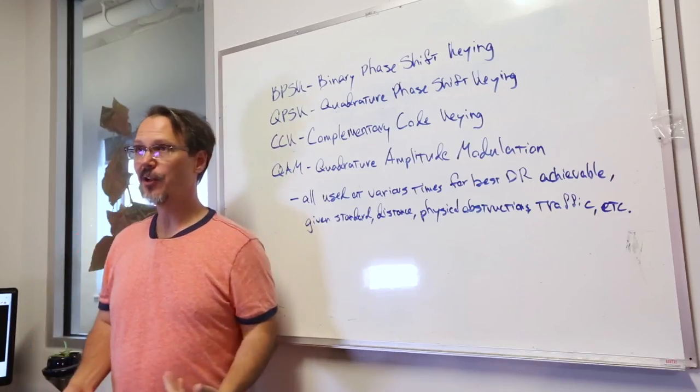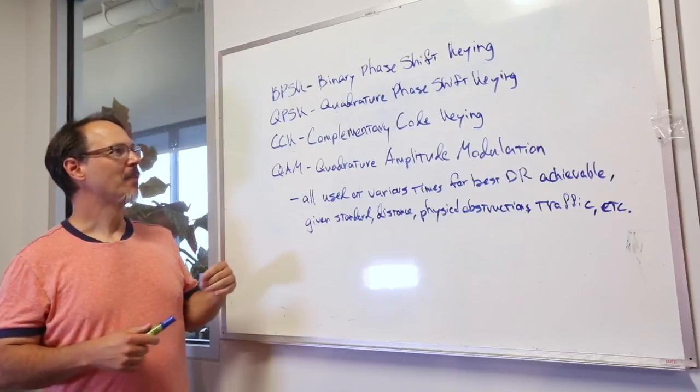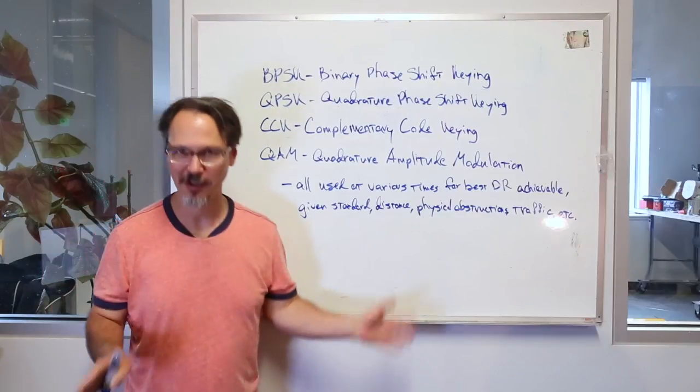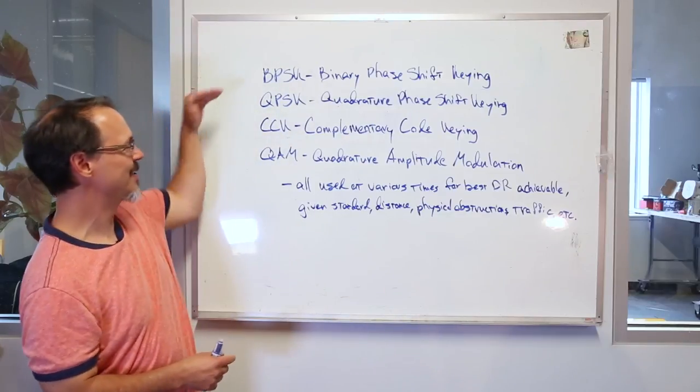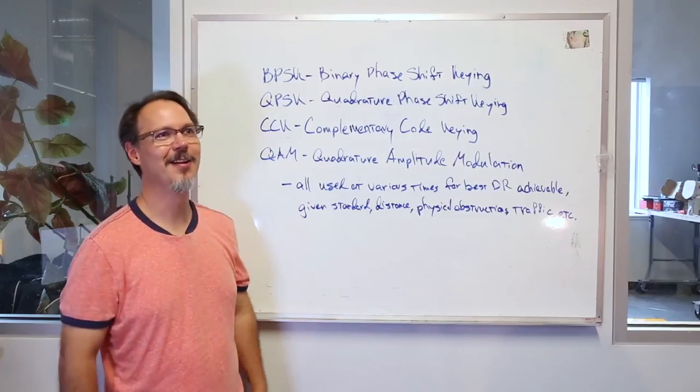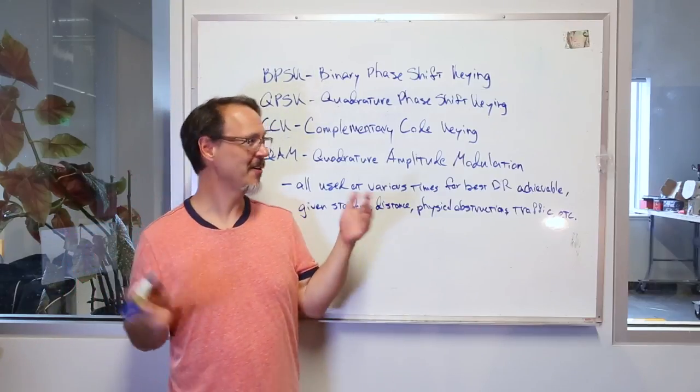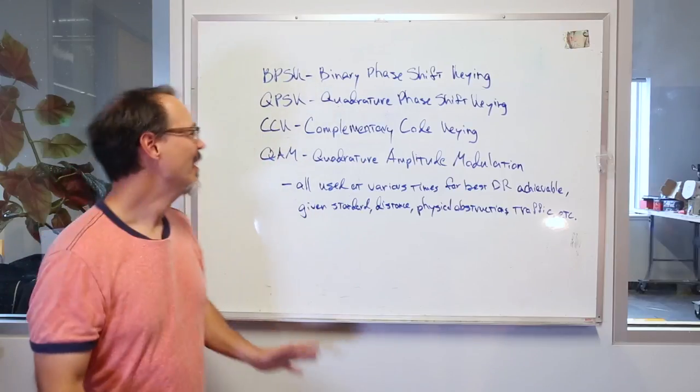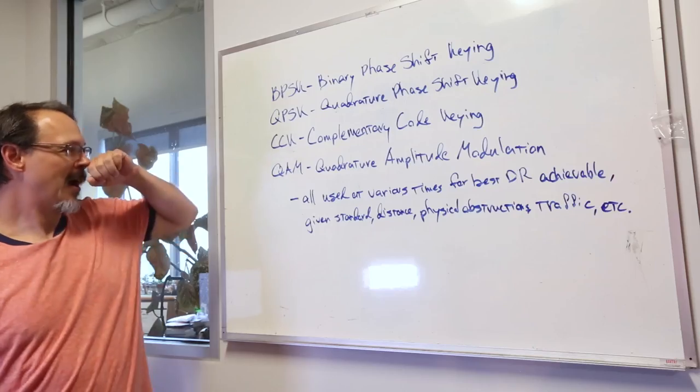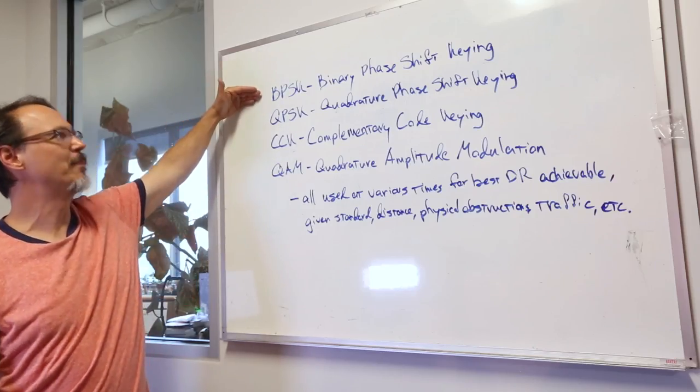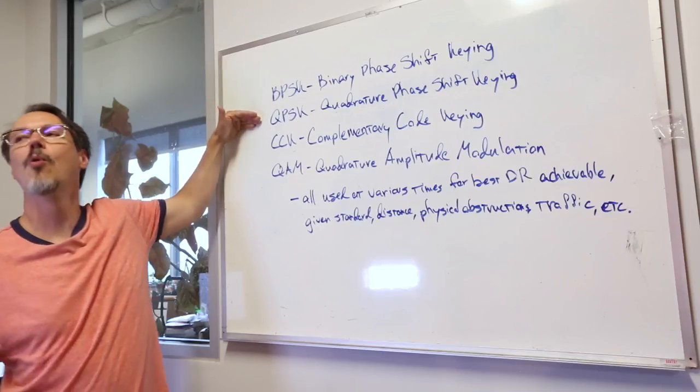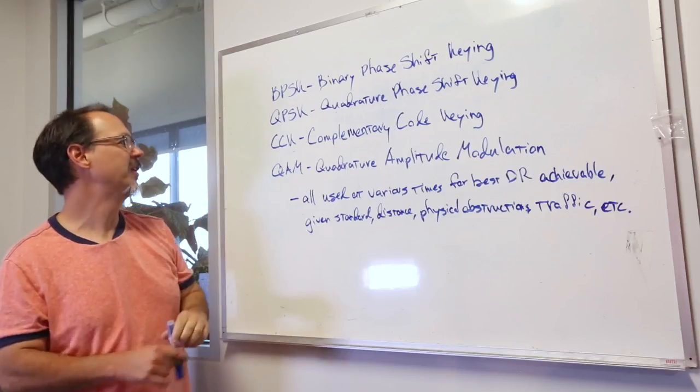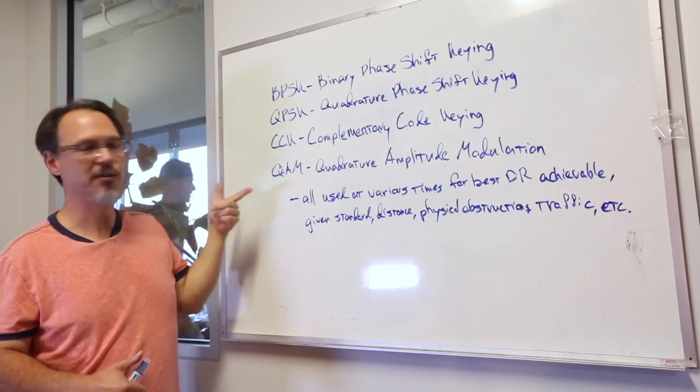Now let's talk about actual modulation of the carrier frequencies. And if you've been bumming out about how much I've been glossing over stuff up to now, this is really going to be a gloss over because each of these things deserves its own video. So modulating the carriers, there are several techniques used. There is BPSK, which is binary phase shift keying. There is QPSK, which is quadrature phase shift keying. There is CCK, which is complementary code keying. And there is QAM, quadrature amplitude modulation.